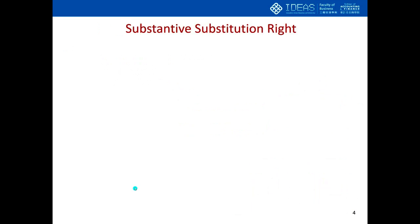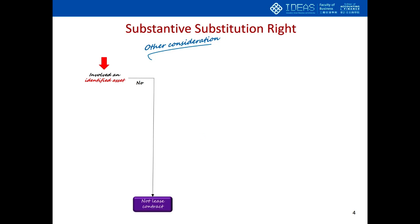Sometimes in a lease contract the supplier has a right to substitute an identified asset over the lease term. Such rights may affect whether the contract satisfies the definition of a lease under HKFRS 16. This is an additional consideration before concluding the contract is a lease. First, we must ensure that an identified asset exists in the contract. If it does, we then need to assess whether the supplier has substantive substitution rights. To conclude that the supplier has substantive substitution rights, two conditions must both be fulfilled: A) the supplier has a practical ability to substitute alternative assets throughout the period of use, and B) the supplier would benefit economically from exercising the right to substitute.